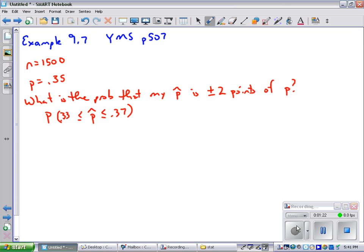First let's check the rules of thumb. As long as I've taken a simple random sample, then I know that the mean of all of my p̂ hats is going to be the same as P, which is going to be 35 percent.